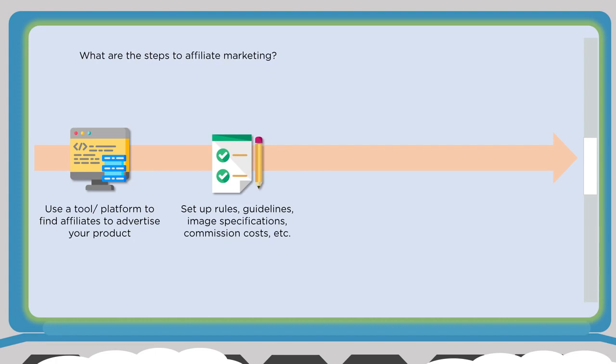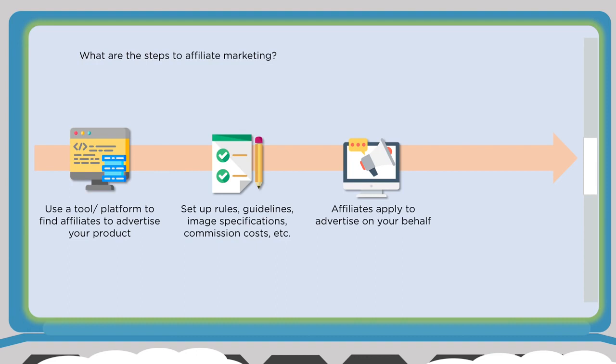Once you set up your affiliate platform, you establish rules, guidelines, and post images, banners, and assets for affiliates to use on their websites. You also establish the commission — it doesn't have to be the same for all affiliates. Top affiliates might get a higher commission compared to others starting out. Everything is set up on the affiliate platform you choose. Affiliates then apply to advertise on your behalf, and you use the platform to approve or disapprove their requests.